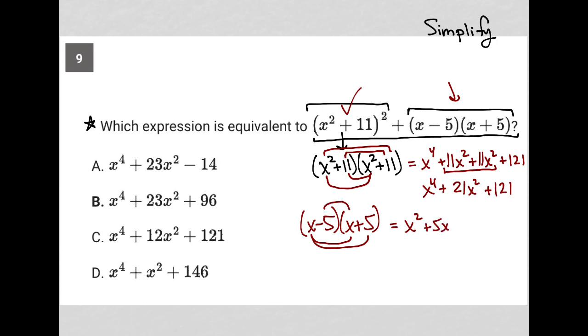Inner times inner, negative 5 times x is a negative 5x. And last times last, negative 5 times positive 5 is a negative 25. Again, combining like terms here actually crosses these terms out because 5x minus 5x is gone. And what we're left with is x squared minus 25.